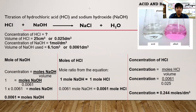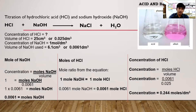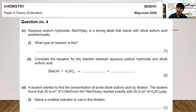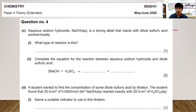Next is an IGCSE past paper: Chemistry Paper 4, May/June 2020, Variant 41, Question 4. Sodium hydroxide is a strong alkali that reacts with dilute sulfuric acid exothermically — meaning it releases heat, making the solution hot.